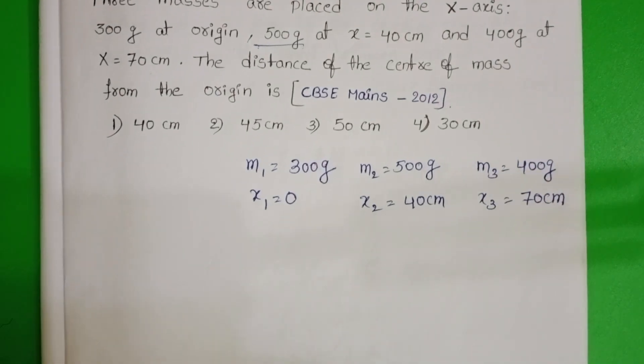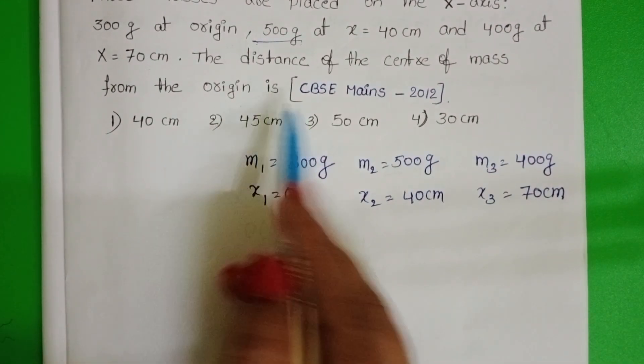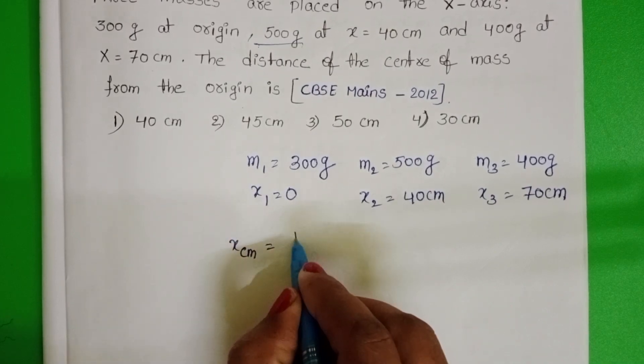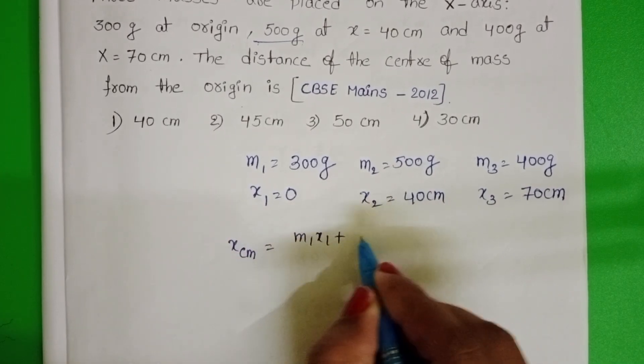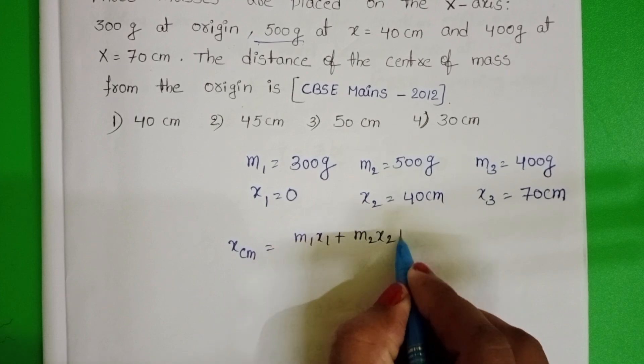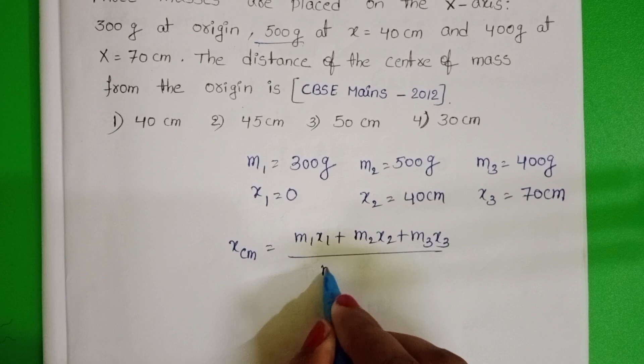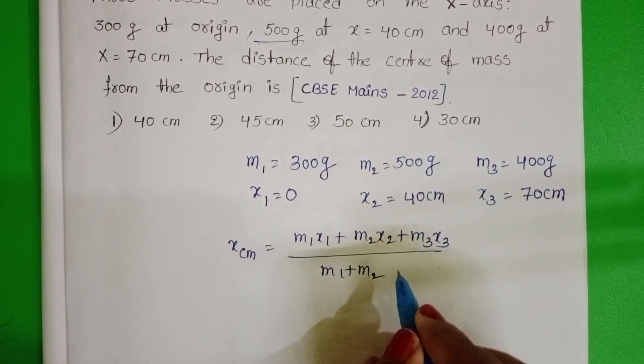The distance of the center of mass from the origin. To find out the center of mass, take the formula: M1 x1 plus M2 x2 plus M3 x3, divided by M1 plus M2 plus M3.